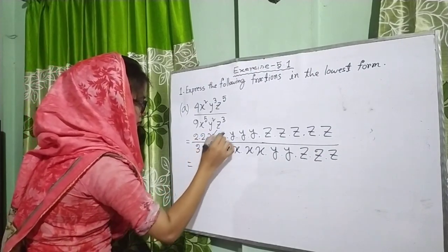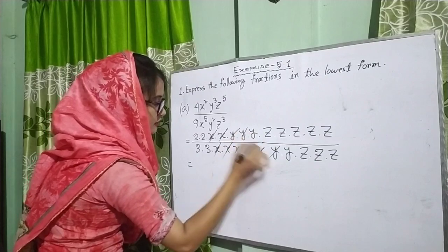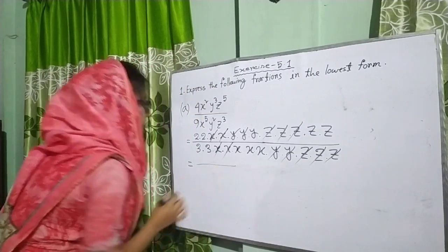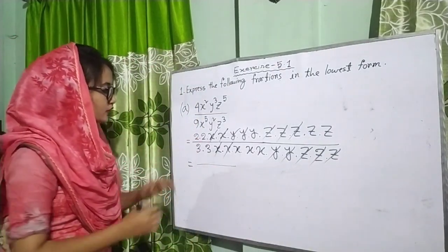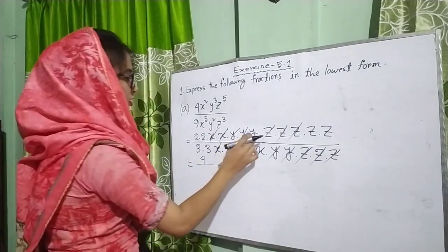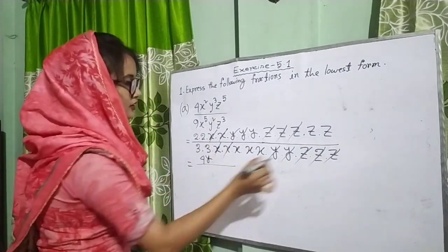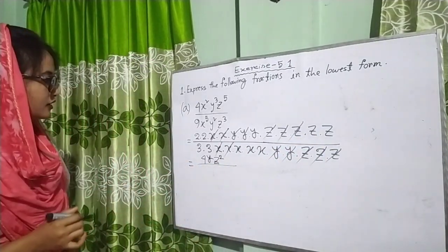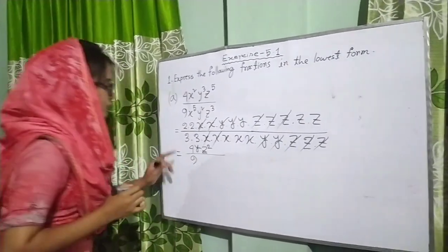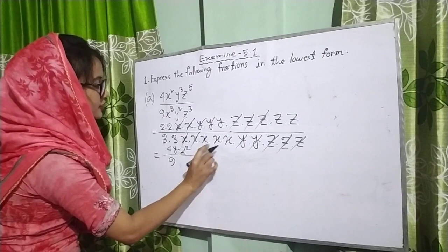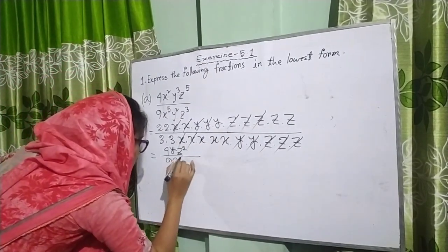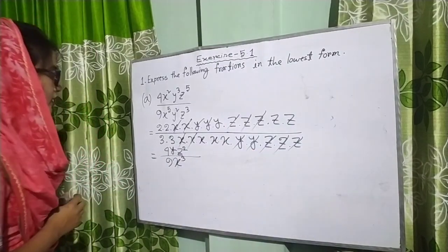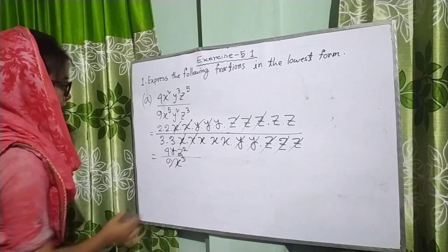Now cancel common factors. In the numerator: 2 × 2 equals 4, y remains 1, and z × z equals z squared. In the denominator: 3 × 3 is 9, x × x × x equals x cubed, and there is no y, there is no z. So our required result is 4yz² divided by 9x³. That is our answer.